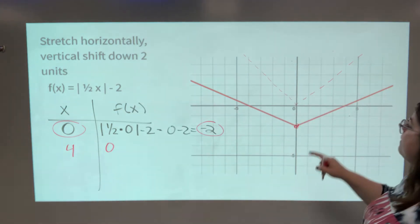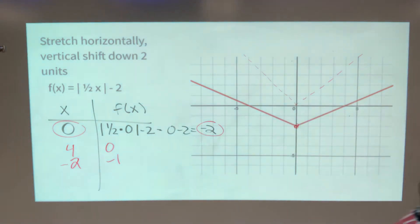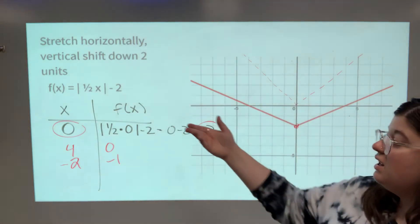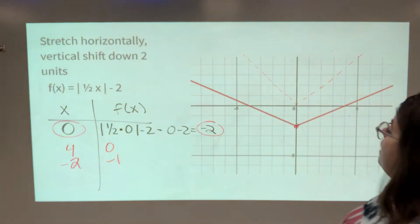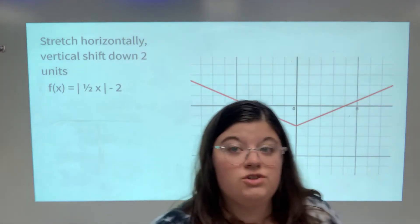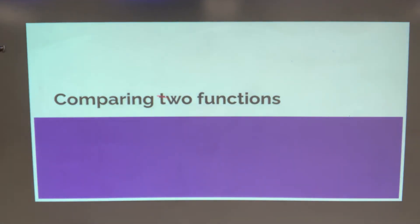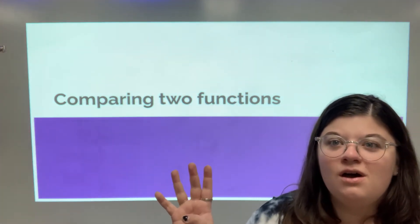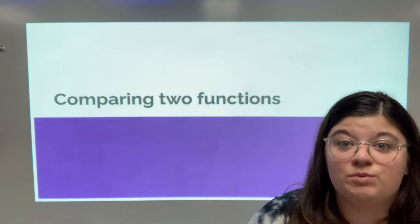You could also just pick points directly off the graph to fill in the table of values — for example, (0, -2) or (-2, -1). You can either plug inputs into the equation or read points from the graph. Now let's talk about comparing two different functions. We've covered representing functions in four ways — what if we want to compare two different functions in these different forms?